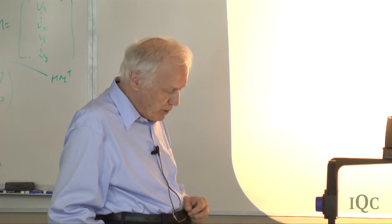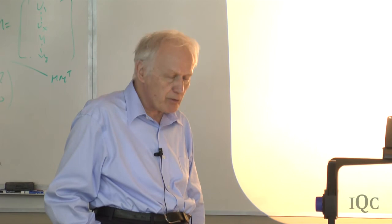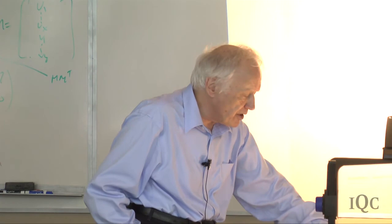Pearl was thinking along similar lines, and in 1989 the two groups combined to produce what is now called GRWP—or CSL, for Continuous Spontaneous Localization. The original Pearl 1989 paper is highly recommended: a very clear, classic paper. There is also a comprehensive recent review by Bassi and Girardi in Physics Reports.